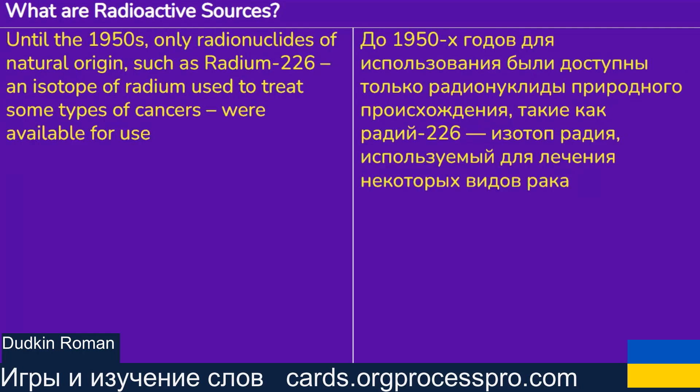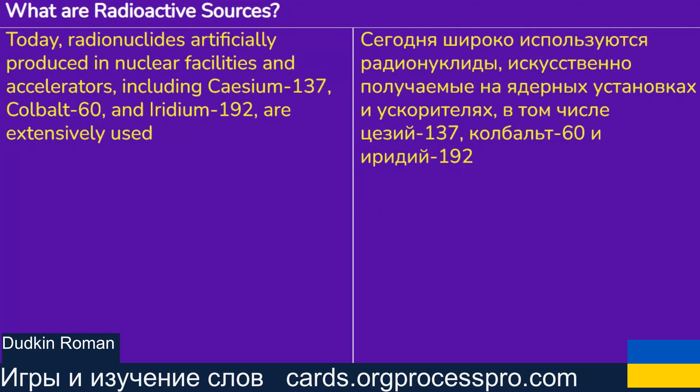Until the 1950s, only radionuclides of natural origin, such as radium-226 — an isotope of radium used to treat some types of cancers — were available for use. Today, radionuclides artificially produced in nuclear facilities and accelerators, including caesium-137, cobalt-60, and iridium-192, are extensively used.